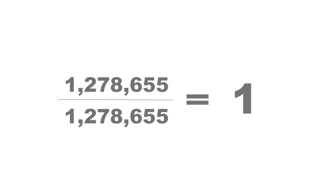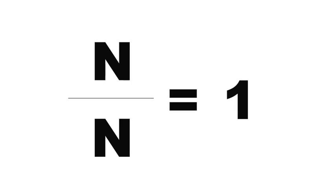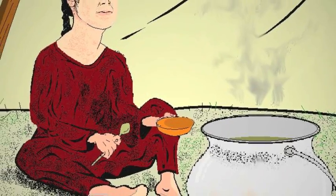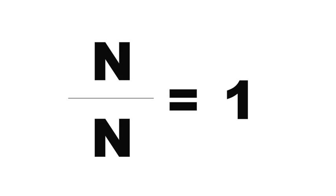But wait, there's more. Like we said, N over N equals 1, and N stands for any number. And this is true whether you were talking about one time you traveled from your camp to another camp, or one fish, or one bowl of stew. N stands for any number, so N over N equals 1.